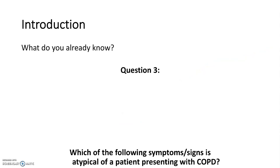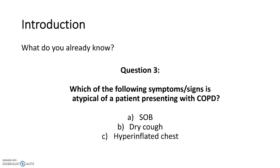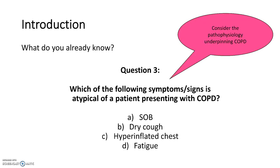The third and final introduction question: which of the following symptoms or signs would be atypical of a patient with COPD? Shortness of breath, a dry cough, a hyperinflated chest, or fatigue? The answer is B, because as per the definition of chronic bronchitis, you would expect a productive cough.